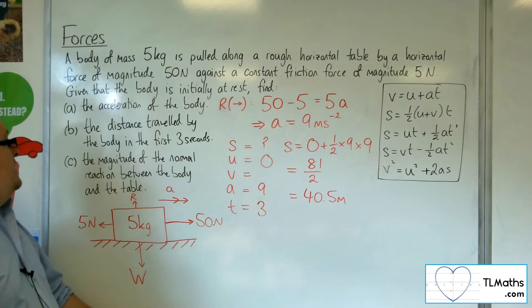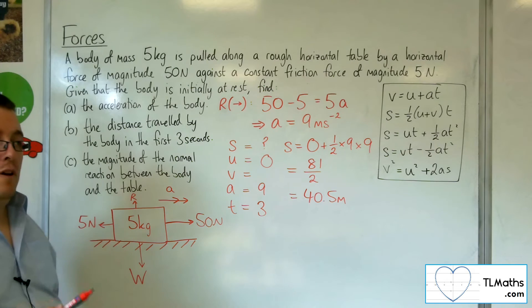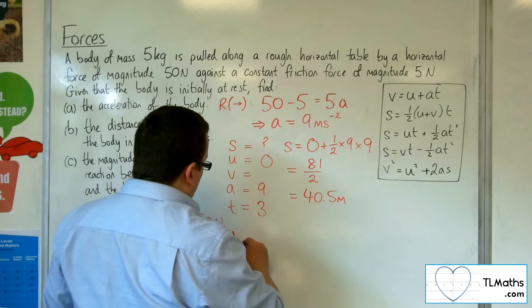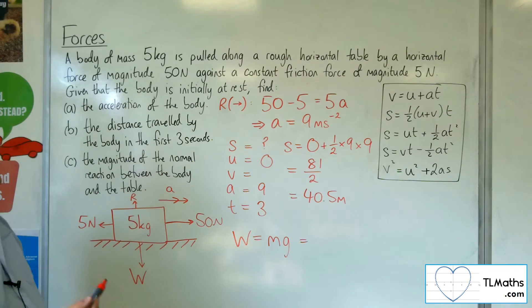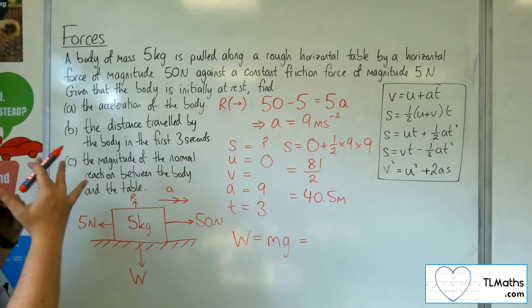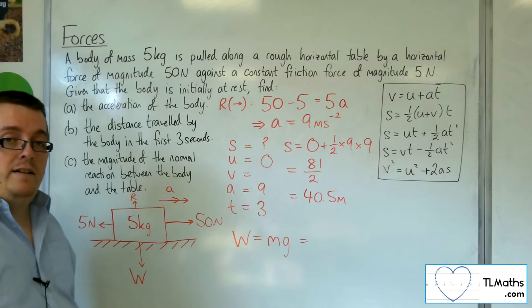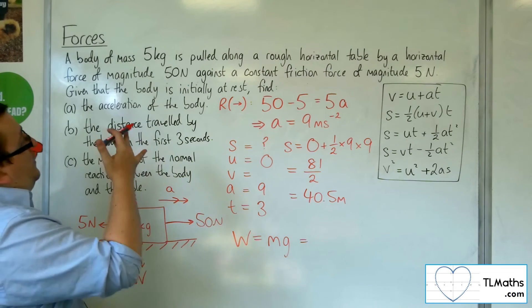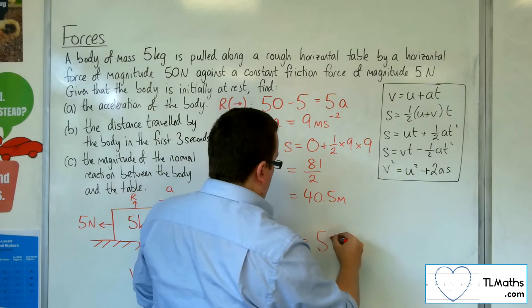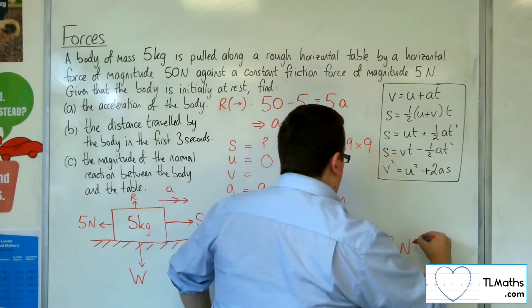Last part, find the magnitude of the normal reaction between the body and the table. Now, we know that we've got this weight working directly downwards. Weight is mass times gravity. Now if I take the gravity as 9.8, the question doesn't specify, I'm going to take it as 9.8. Maybe the question you're working on in the exam might say 10, might say 9.81. Use that if it says. So we've got the mass is 5 times by 9.8, so that would be 49 newtons. There's our weight.